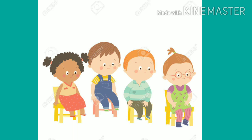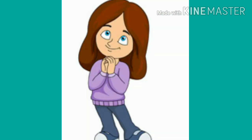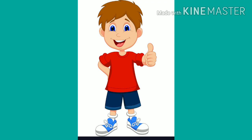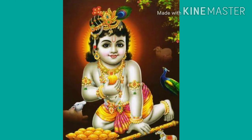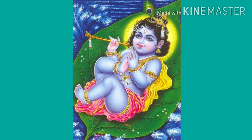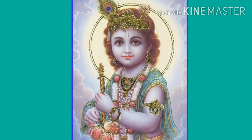Good. You are all singing very nicely — you are all remembering the song and singing. Now, can we start saying the new shlokam? What is the name of the shlokam? Bala Mukundashtakam — it is about little Krishna. In Bala Mukundashtakam, today we are going to sing the first shlokam which I taught you in the last class. Are you all ready, children, for singing the shlokam?